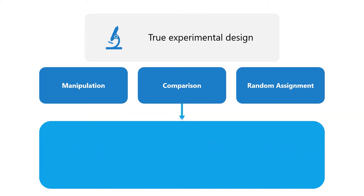Comparison further establishes causality by comparing a situation where the causal variable is absent to a situation where it is present, then showing that there is no change in the outcomes when the causal variable is absent while there is a change when it is present. This eliminates the threat of maturation.